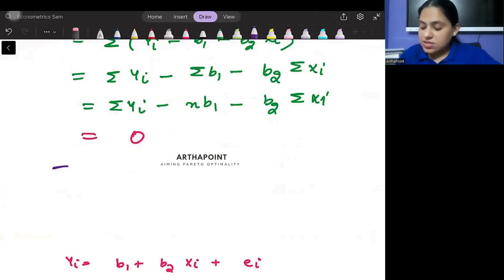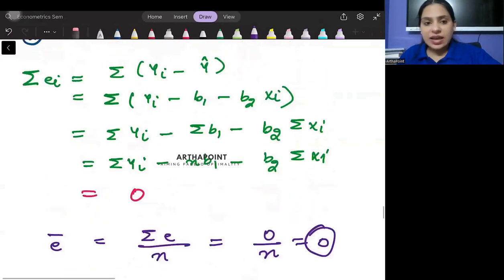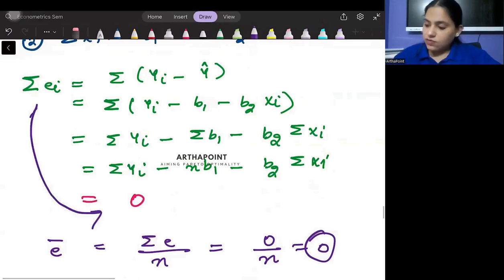And if the sum of the error term is 0, so e bar which is nothing but the mean of the error term which is summation e by n will be 0 by n and therefore 0. So we can go ahead and say that the sum of the error terms will also be 0. Am I clear?